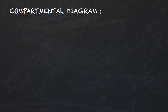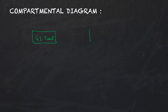Let's now form the compartmental diagram for the general case. This problem can be considered to consist of two compartments: one being the GI tract and the other being the bloodstream. So our first compartment is the GI tract and the second one is the bloodstream.